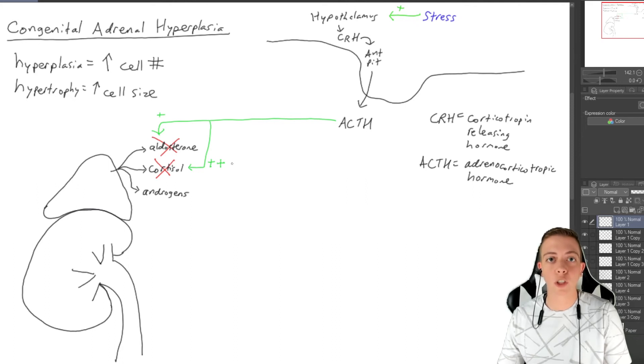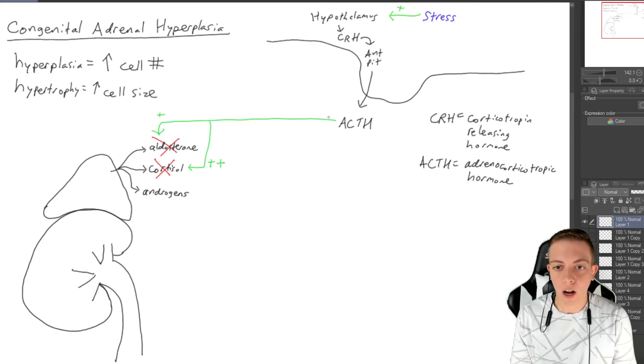You can't inhibit any of this pathway because you have no way to produce aldosterone or cortisol. The brain is going to think that we have no aldosterone and no cortisol and that we need to make more. Then the brain is going to tell the anterior pituitary that we need to release more ACTH, and so you're going to get a really high amount of ACTH.